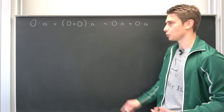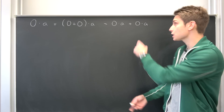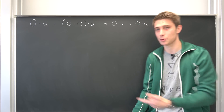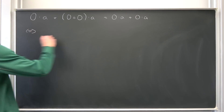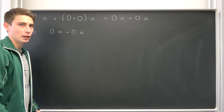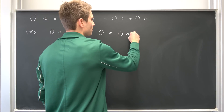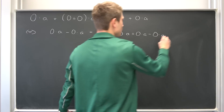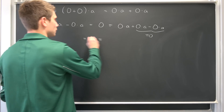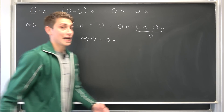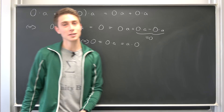Since we have closure under multiplication, this is just some element in the field. We also know that our field elements together with addition form a group, so for every zero times A, we have a negative zero times A as the additive inverse. So why not subtract zero times A on both sides? That's equivalent to saying we have zero times A minus zero times A, which by definition of a group results in the identity — namely zero equals zero times A plus zero times A minus zero times A. This is once again zero. Something plus zero is the something itself, so we end up with zero equals zero times A. We have also introduced that something times zero is zero. So we have shown this using the field axioms.